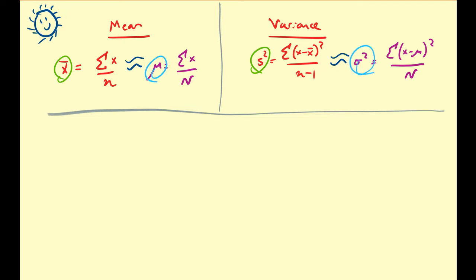So, one question one may ask is: why do we use these particular statistics to estimate these particular parameters? Wouldn't there possibly be other ones that are better? Namely, why do we use the sum of x-values divided by n to approximate the sum of x divided by the population size? Why do we use these formulas to approximate one another?